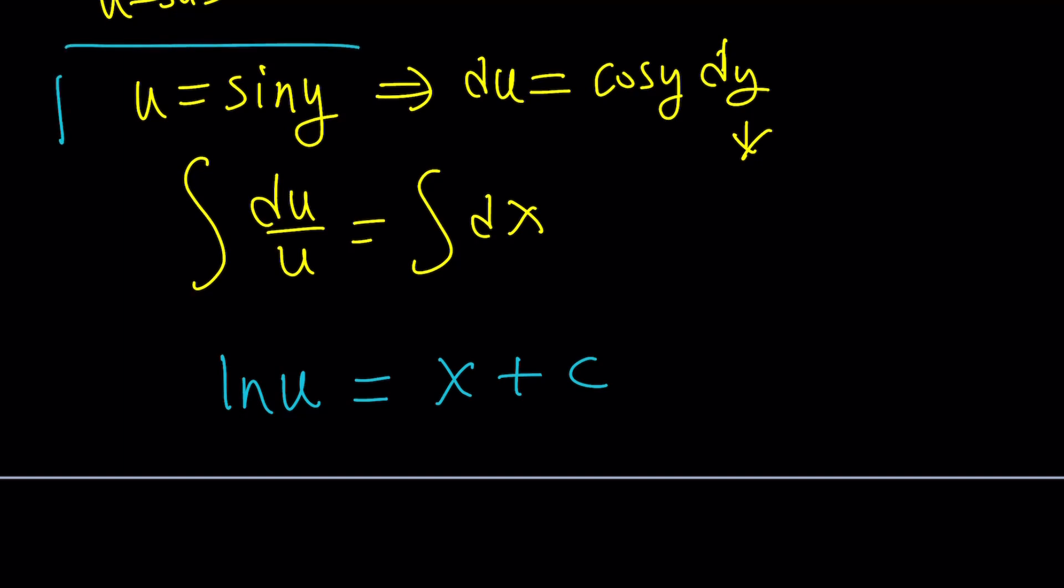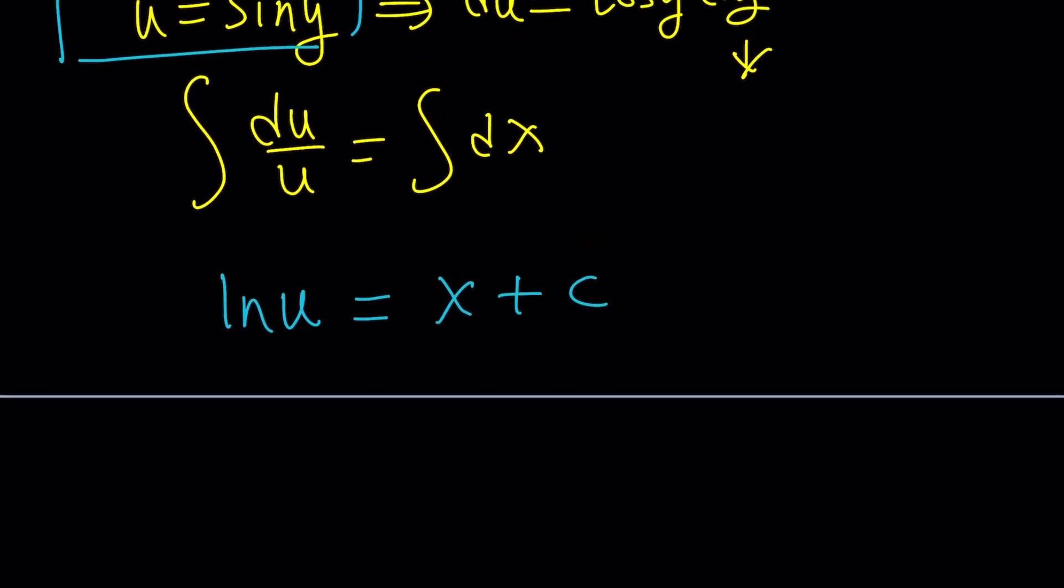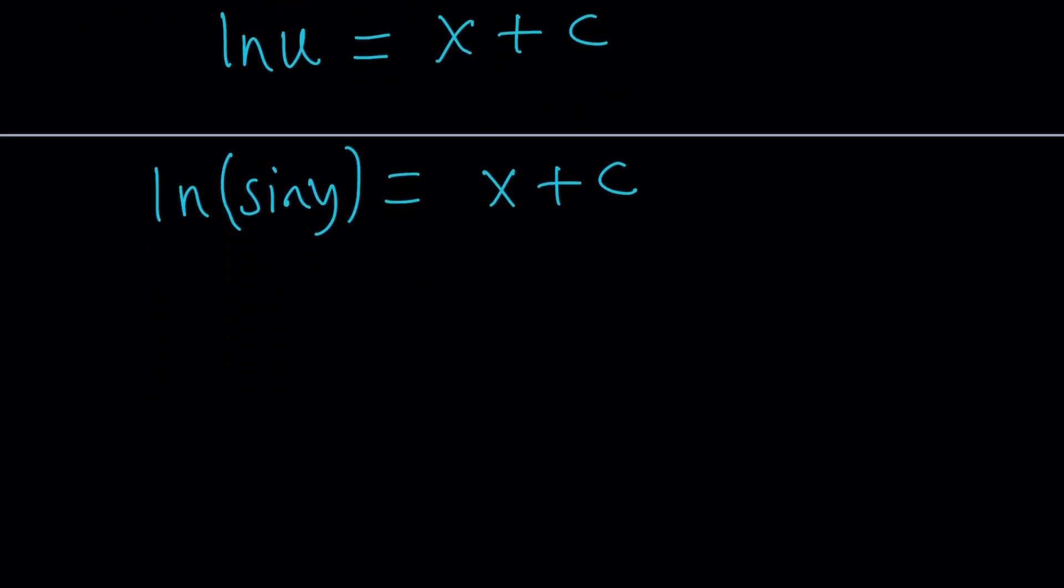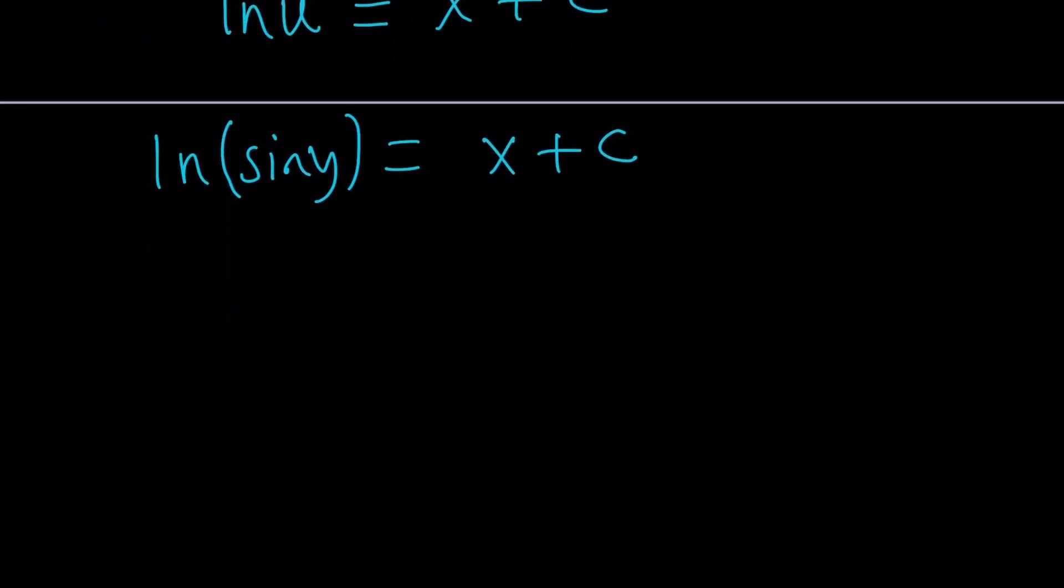And on the right-hand side, like I said earlier, I'm going to use the constant. So this is the answer, right? Nope. We have to back-substitute. What is u? Sine. What is u? What are you? Who are you? We're going to replace u with sine y. And we can leave it at this point.